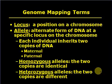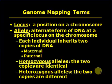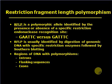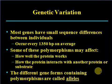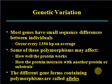In genome mapping, a locus is a position on a chromosome, and alleles are alternate forms of DNA at a specific locus. Each individual inherits two copies of DNA — maternal and paternal. Homozygous means the two alleles are identical. Restriction fragment length polymorphism (RFLP) relates to genetic variations — most genes have small sequence differences between individuals, occurring on average every 300 to 350 base pairs. Some polymorphisms may affect how well a protein works or how proteins interact. Different gene forms containing polymorphisms are called alleles.